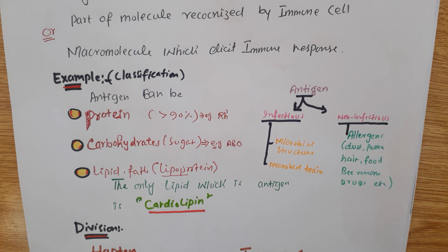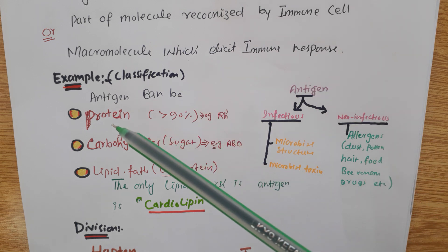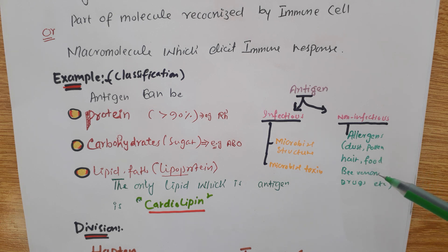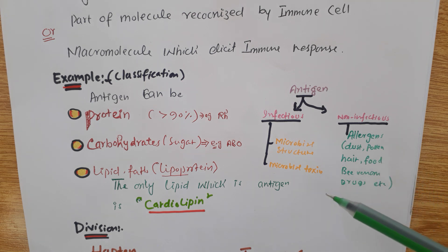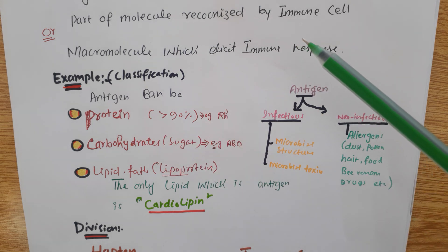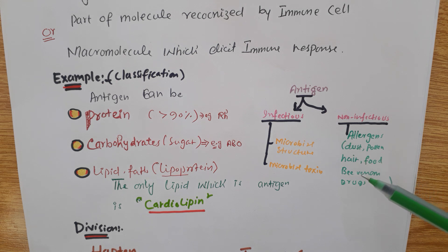Non-infectious antigens include allergens. If we have allergy to dust or pollen, they all have proteins and those proteins are antigens. Like dust, pollen, hair, food, venom which contains melittin — and some drugs can also lead to being antigens.